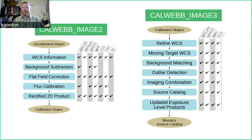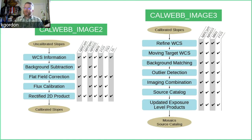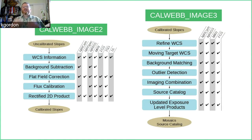For imaging, in stage two we're still processing individual exposures: you add WCS information, apply flat fielding, apply flux calibration, and so on. You can see how different instruments use or skip different steps. In stage three — image3 — you move to higher level data products, combining data from multiple exposures, doing additional outlier detection to catch anything that snuck through the ramp stage, and combining images into a mosaic and making a source catalog.